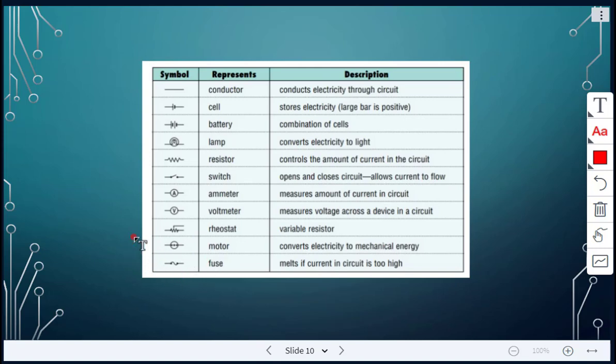All right, so a motor would be converting electricity to mechanical energy. So an example, like a fan, that would be an example. A fuse here. We'll talk a little bit more about fuses later. But fuses are there for safety. They will melt if the current in the circuit gets too high. Therefore, avoiding fires and so on.